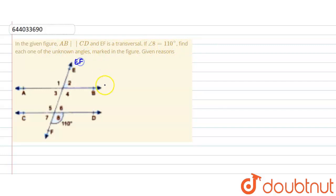So this is EF, this is AB, this is CD. This is angle 1, angle 2, angle 4, angle 3, angle 5, angle 6, this is angle 8 given to us as 110 degrees, and this is angle 7. So we have to find the remaining angles other than angle 8.